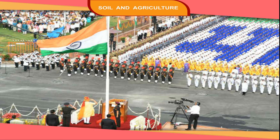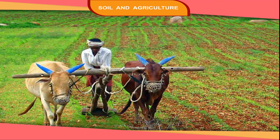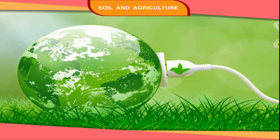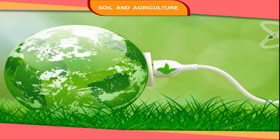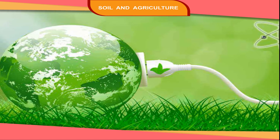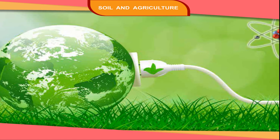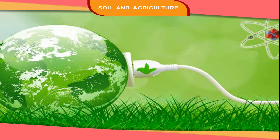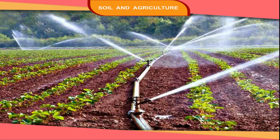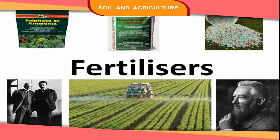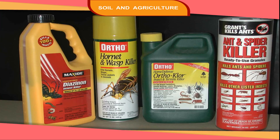After independence, our country has made a great revolution in the production of crops. This great revolution is called the Green Revolution. This has been possible because of irrigation facilities, fertilizers and pesticides.